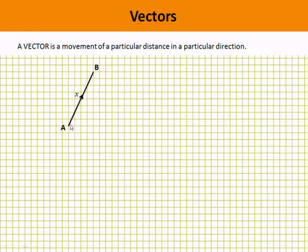This vector goes from point A to point B and is labeled X. It's four units along and eight units up to get from A to B. We can label this in three ways: we can call it AB with an arrow on top indicating it goes from A to B, we can call it X, or we can write it as the column vector 4, 8.